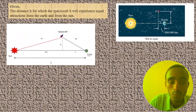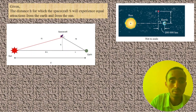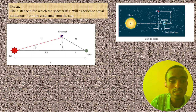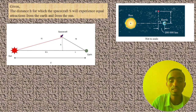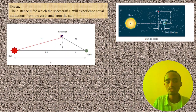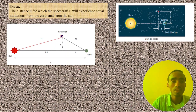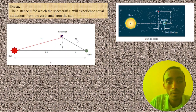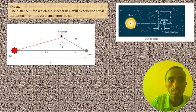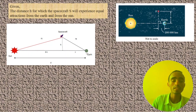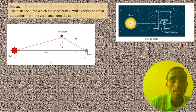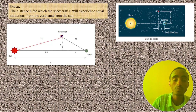In the free body diagram, here we have the Sun, and here we have the spacecraft. The spacecraft is at a distance RS from the center of the Sun, meaning the distance from the center of the Sun to the center of the spacecraft is RS. We use RS to find the gravitational attraction between the Sun and the spacecraft. RE is the distance from the center of the spacecraft to the center of the Earth.